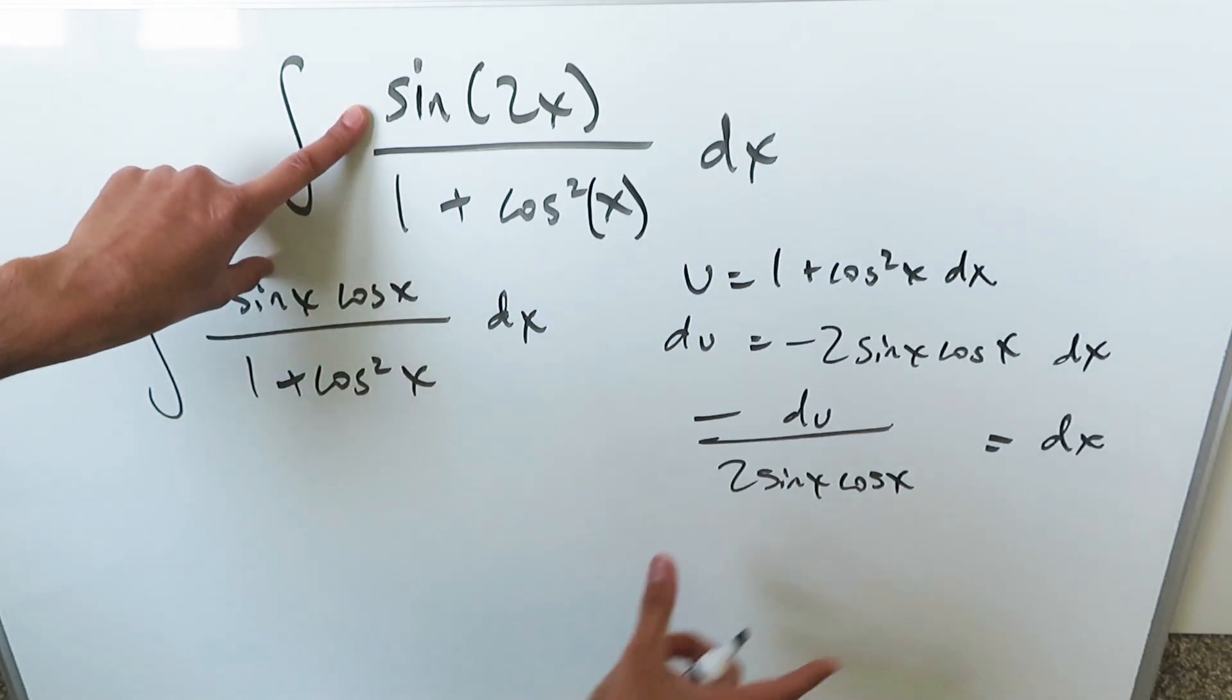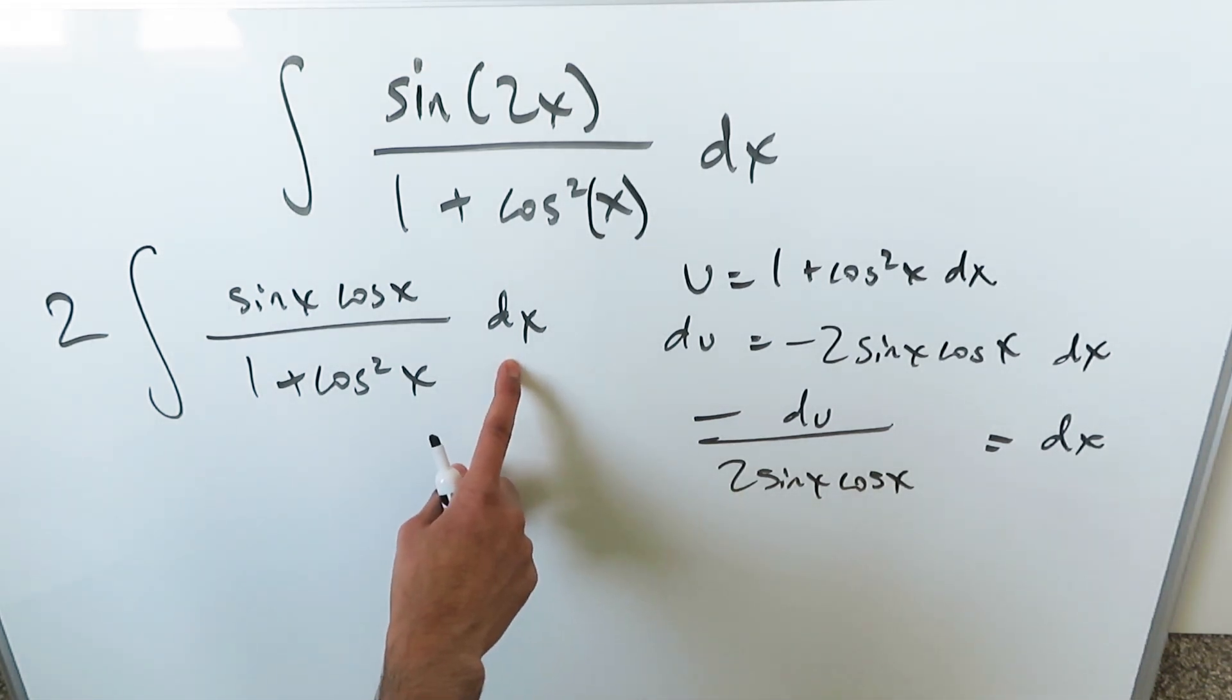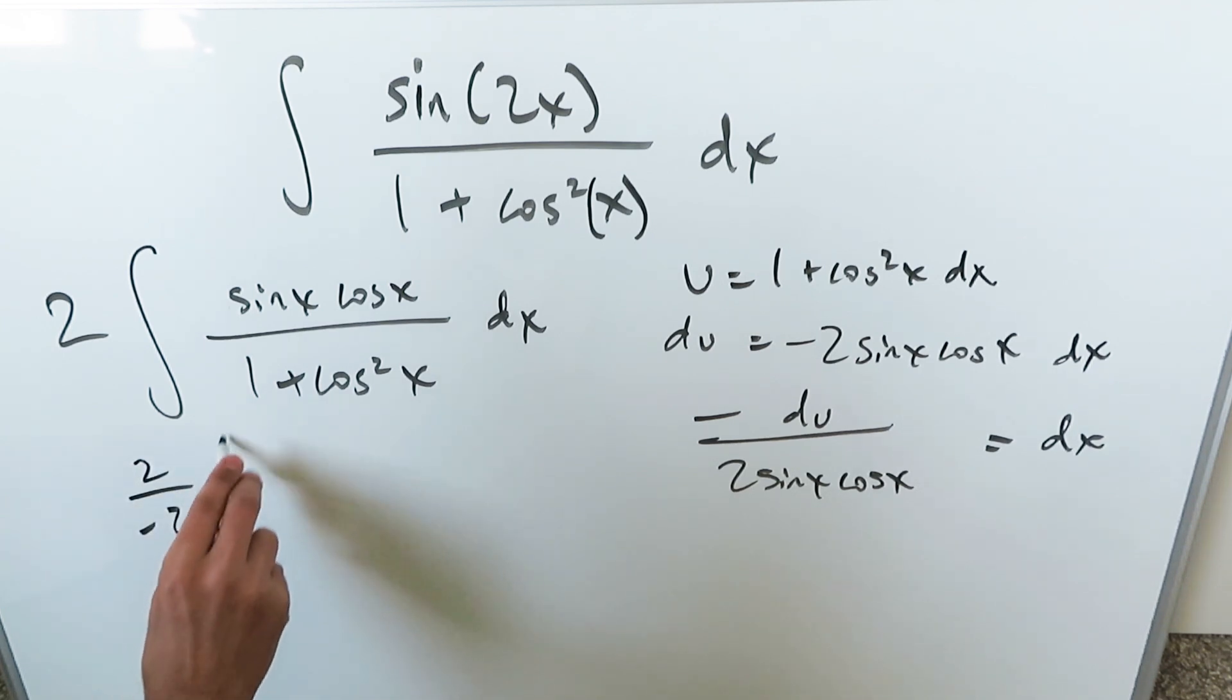Either you could have kept it as this and you could recognize this is equal to that and rewrite this as sine 2x, or you can open everything up and cancel them out anyways. When you bring the substitution in place of dx, what will you have?